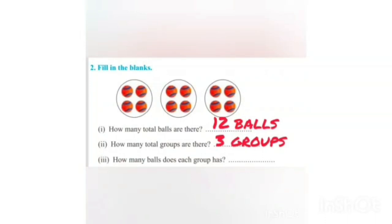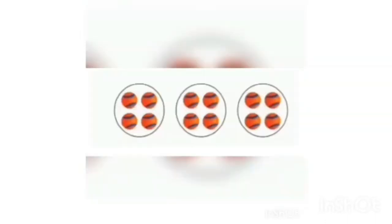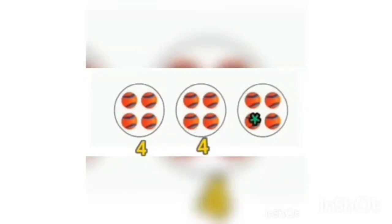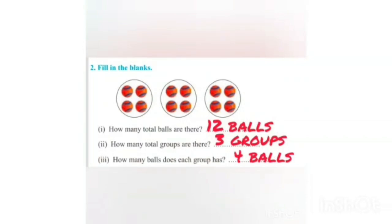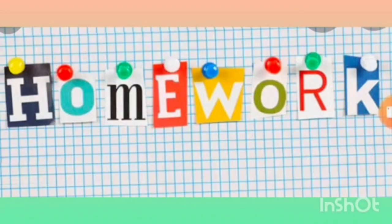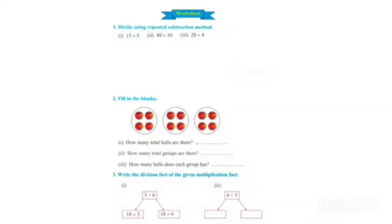Third question: how many balls does each group have? Let's count the balls — 1, 2, 3, and 4 in each circle. Each circle has 4 balls, so the answer is 4 balls. Your exercise is complete. For homework, do question number 1 and 2 of your worksheets properly. Stay tuned to your online studies. Take care, thanks.